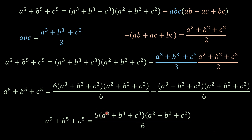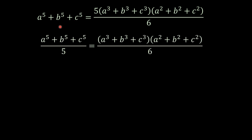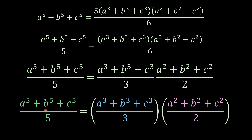And then from here I'm going to send this 5 dividing on the left side of the equation. So we got this. And well, 6 is 3 times 2. So we can write this one here — we have already found the proof. So we can write this as a to the 5 plus b to the 5 plus c to the 5 over 5 equals to this beautiful product here.